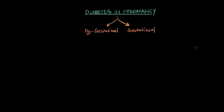90% of cases — so nine of every ten cases of diabetes in pregnancy — falls into the category of gestational diabetes, and the other 10% are pre-gestational diabetics. So there's something about pregnancy that makes women more susceptible to developing diabetes, and we'll discuss exactly what that is in just a bit.